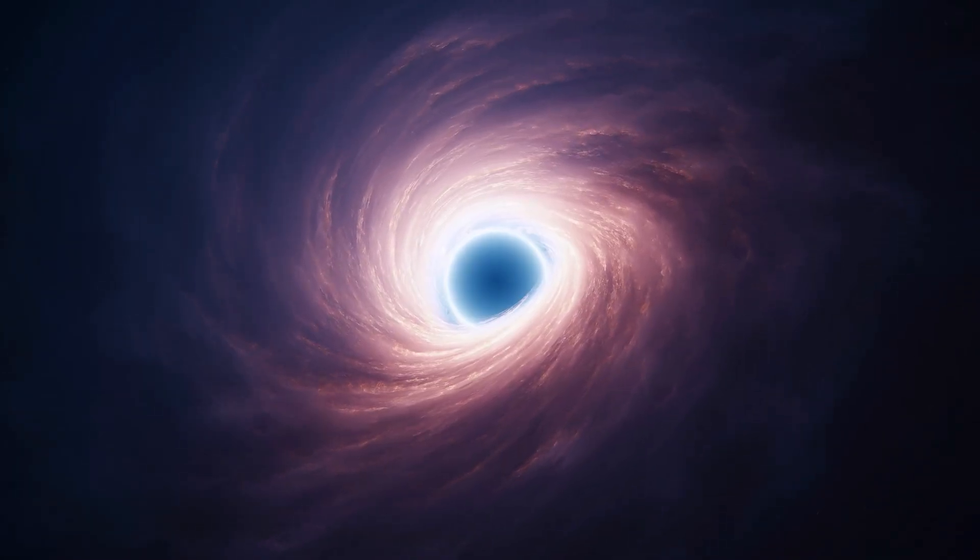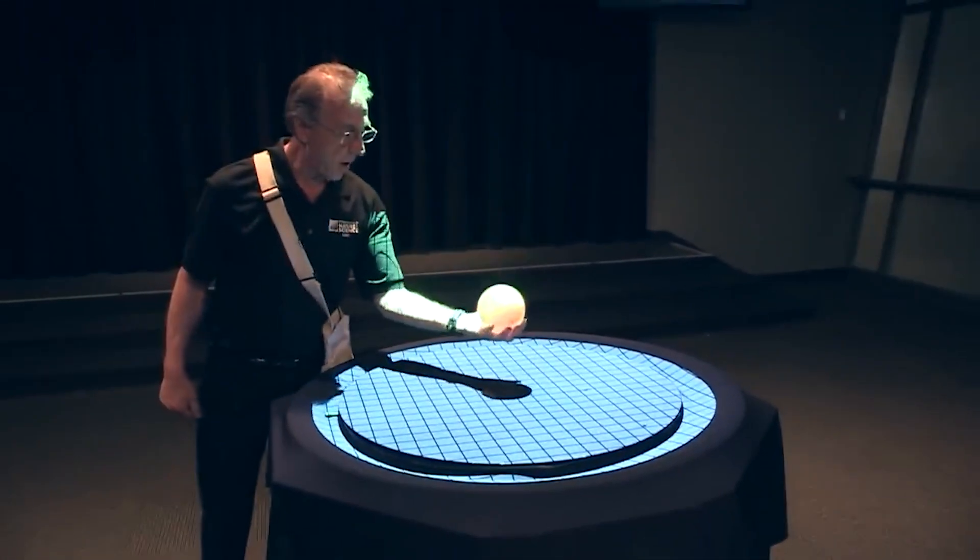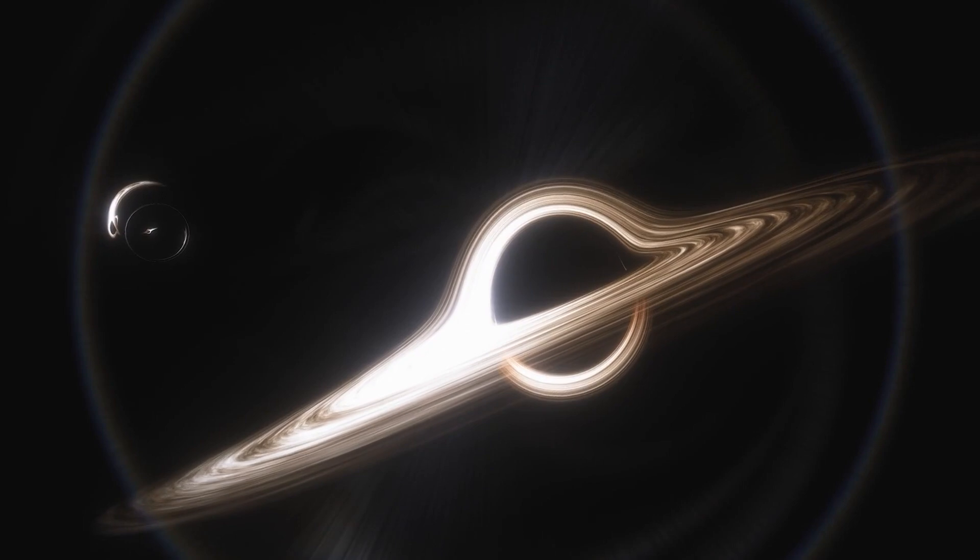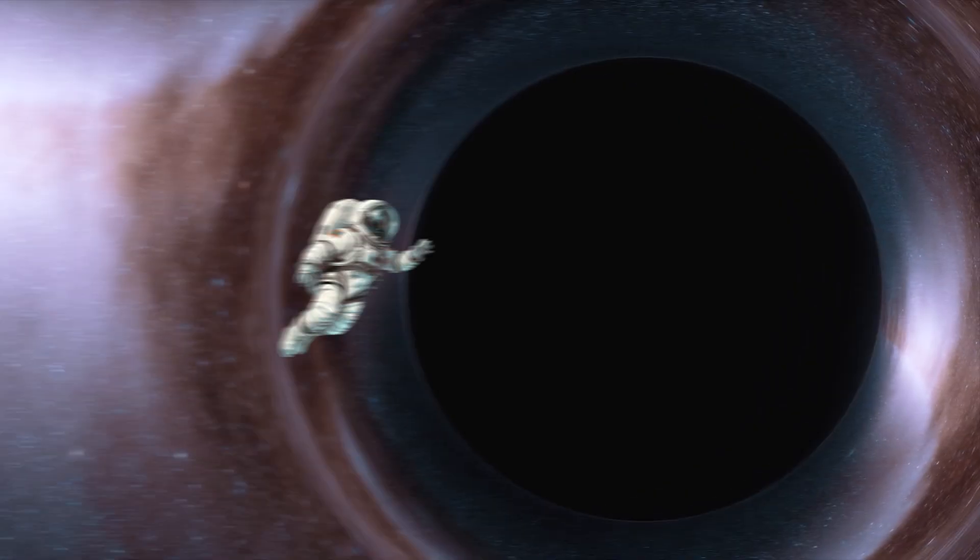It's all thanks to relativity. You see, black holes have an enormous amount of mass squeezed into a tiny space. This intense concentration of mass bends the space and time around it. Think of it like a heavy ball on a trampoline, warping the fabric around it. That warping is what creates the black hole's powerful gravitational pull.